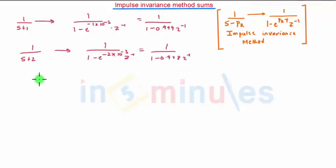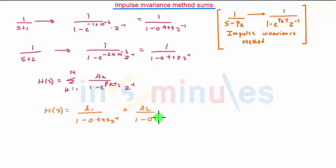So the transfer function can be written by the same formula: summation k is equal to 1, Ak upon (1 minus e raised to Pk T into z). So H(z) is equal to A1 upon (1 minus 0.999 z raised to minus 1) plus A2 upon (1 minus 0.998 z raised to minus 2).